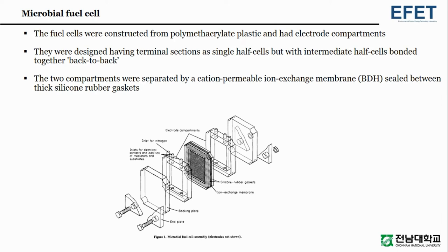Now we are going to discuss the assembly of the microbial fuel cell. The fuel cells were constructed from polymethacrylate plastic and had electrode compartments. They were designed having terminal sections as single half-cells but with intermediate half-cells bonded together back to back. The two compartments were separated by a permeable ion exchange membrane sealed between thick silicone rubber gaskets.